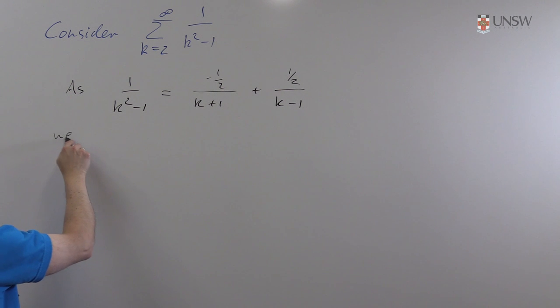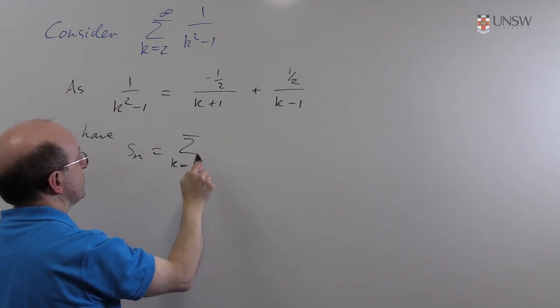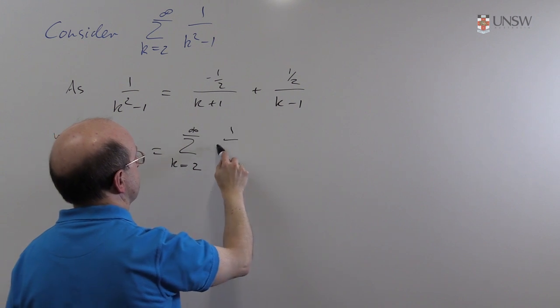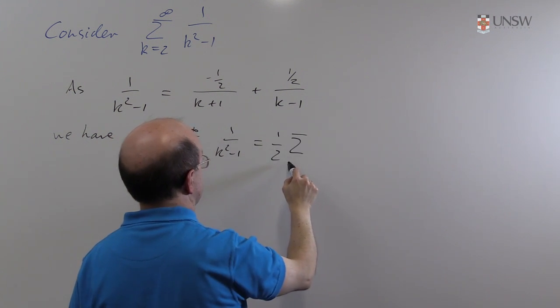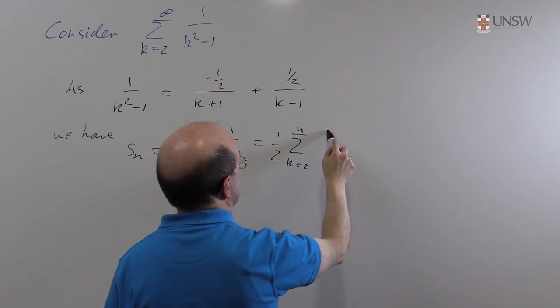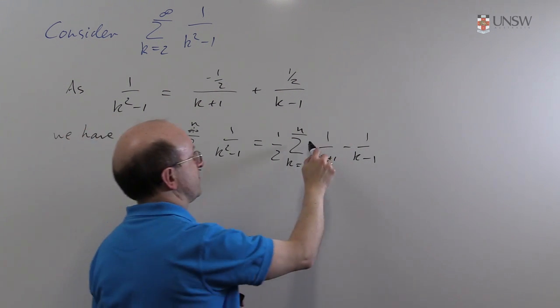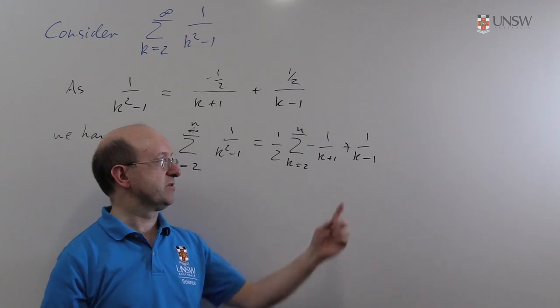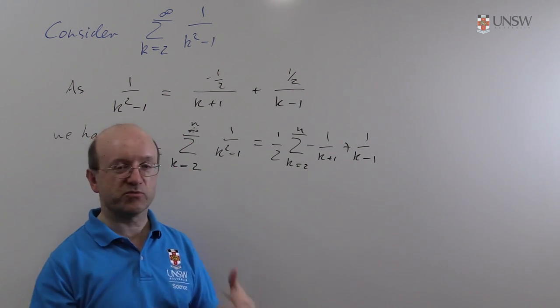So if that is true, we again want to look at the sequence of partial sums. The sum from k equals 2 to infinity, sum from 2 of course because the sum is infinity when k is 1. 1 over k squared minus 1 is, we'll take the factor of a half at the front, sum from 2 to n. That should have been an n there of course, not an infinity. 1 over k plus 1 minus 1 over k minus 1. And we can now break this up into a sum and do a shift. We can do what I'm going to do in this case is just write the terms out and watch them all cancel.